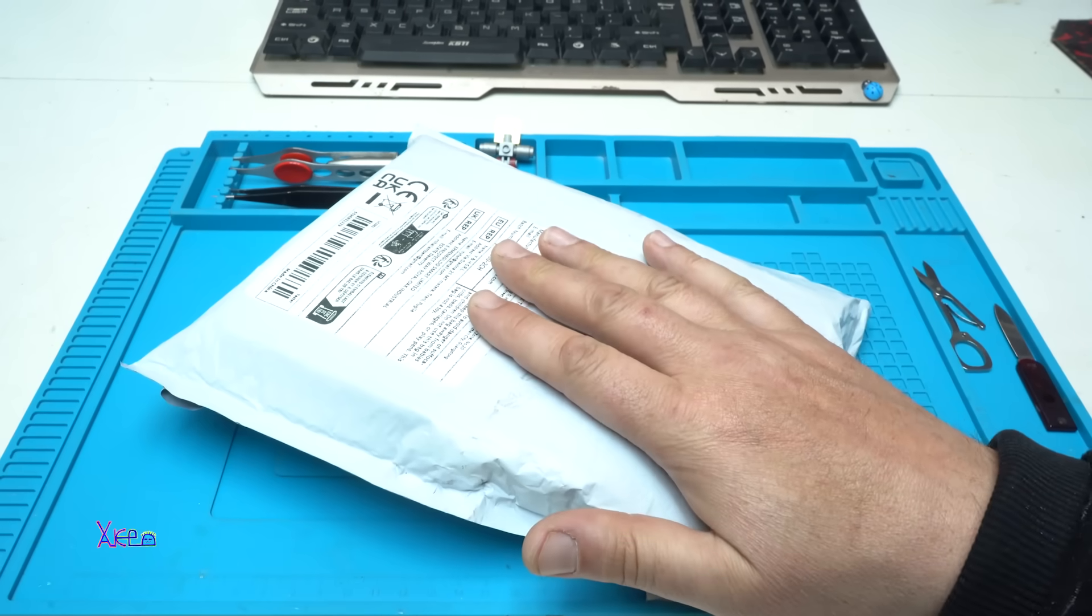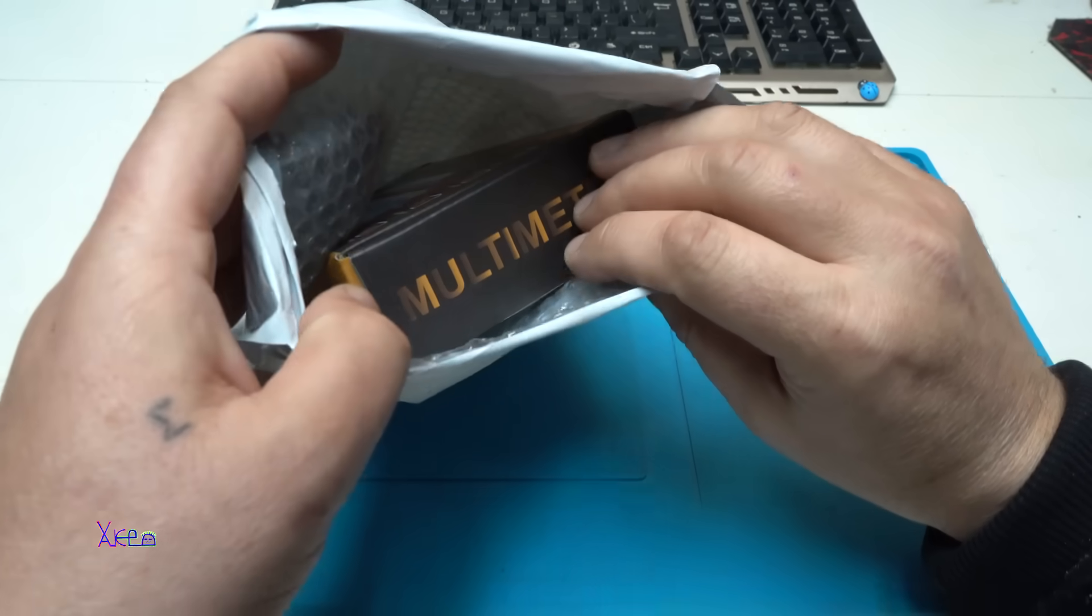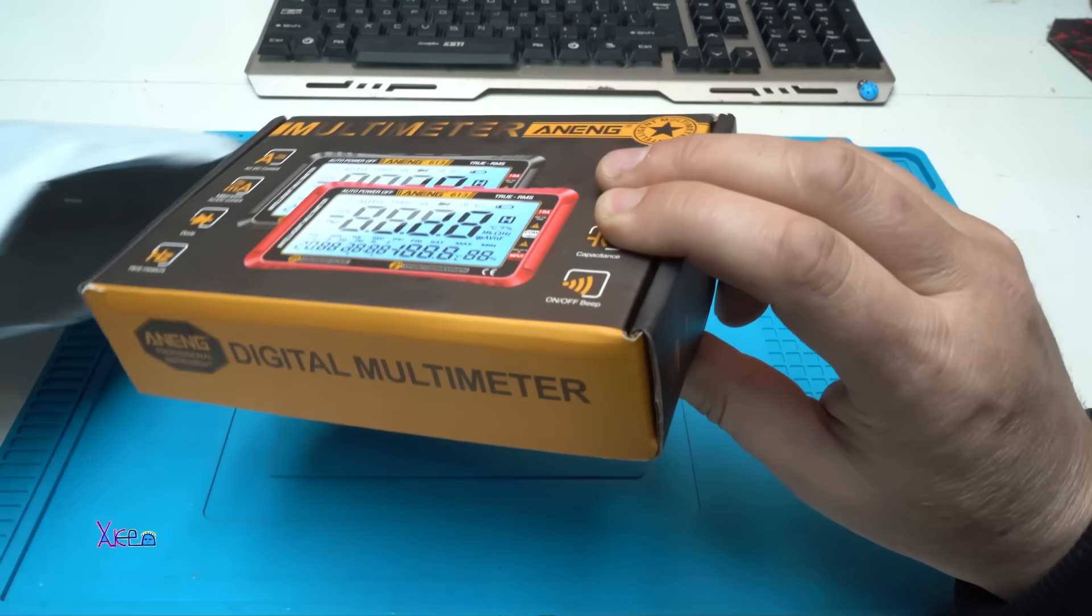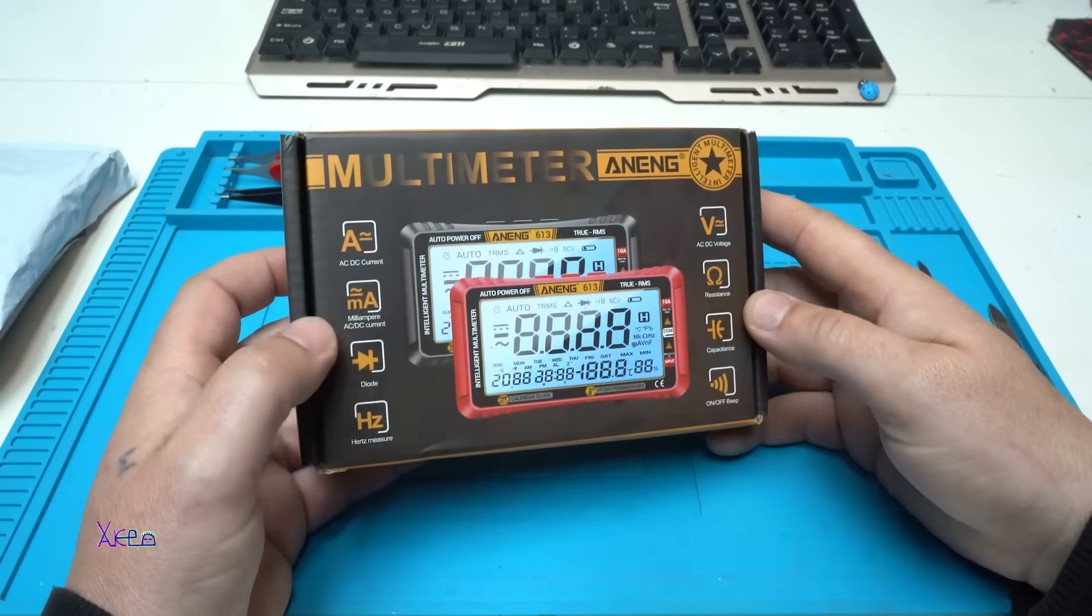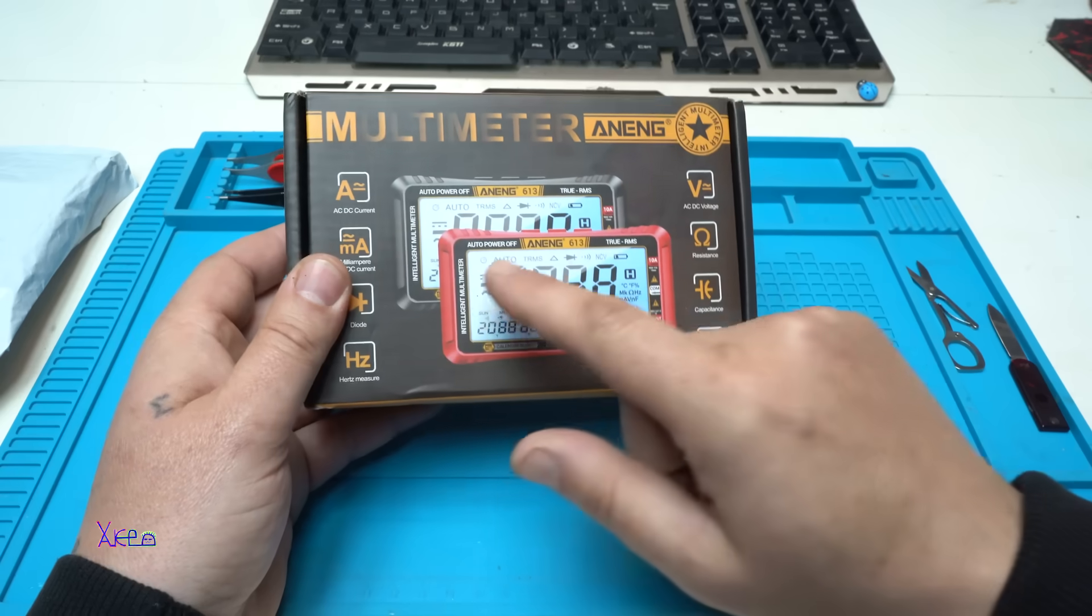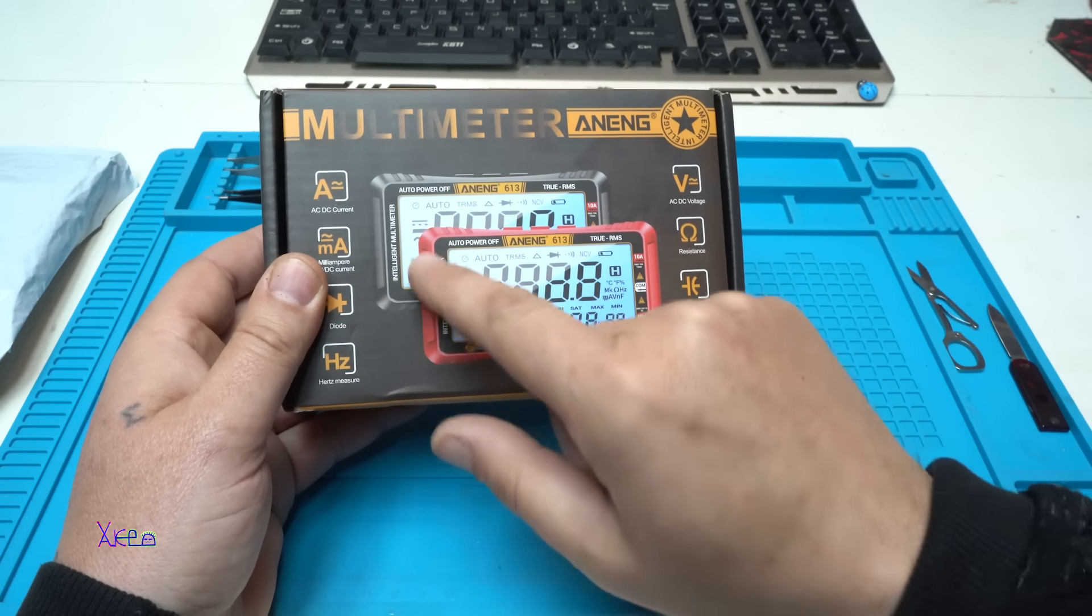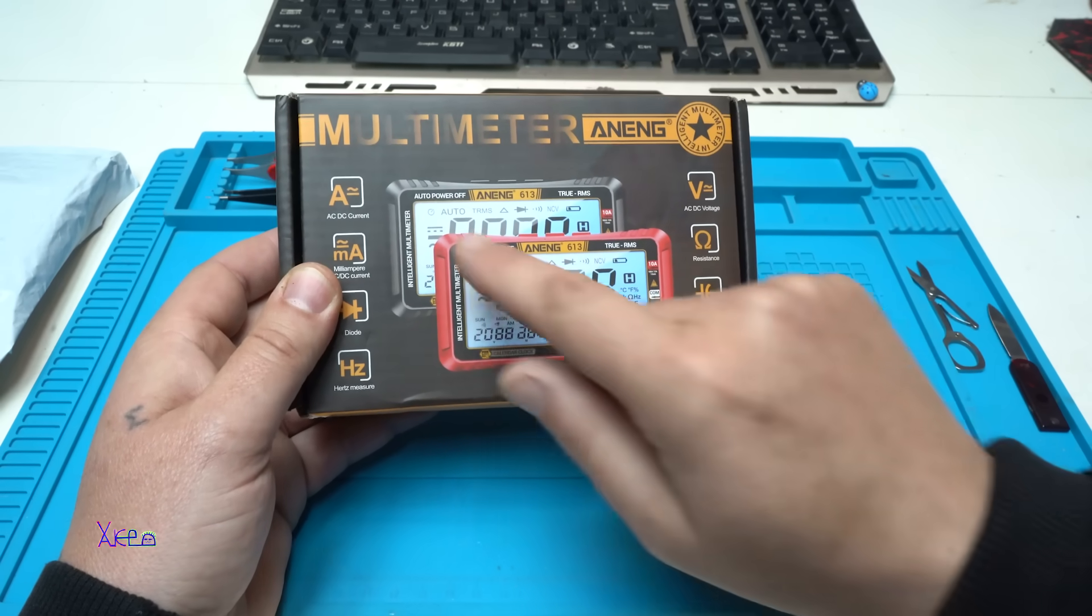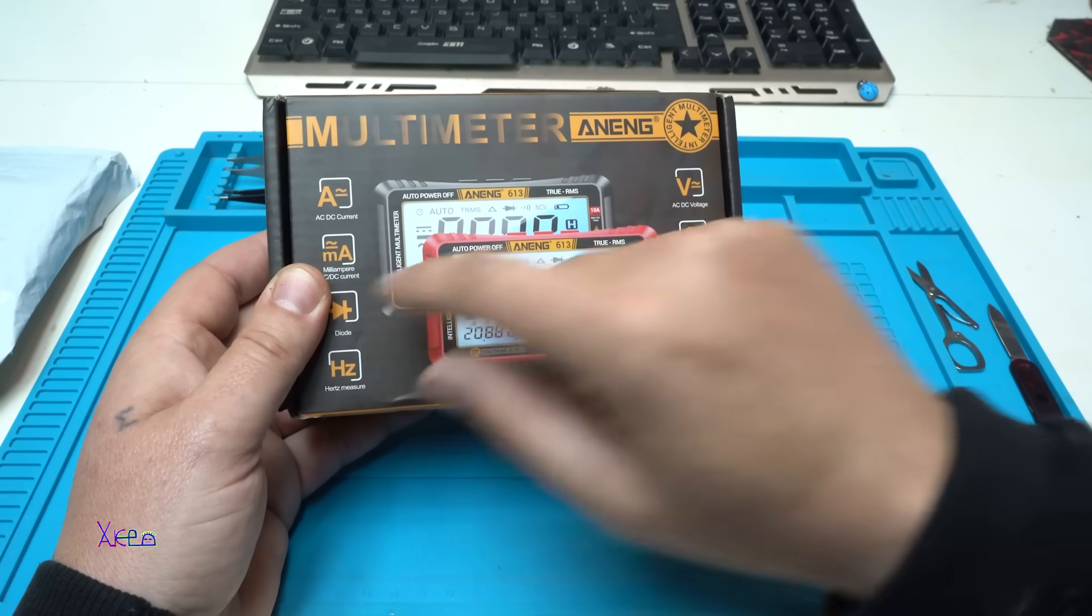And I got it. I'm so happy, but no bubbles. And what is special about this multimeter? It has a big screen, horizontal big screen, horizontal multimeter.